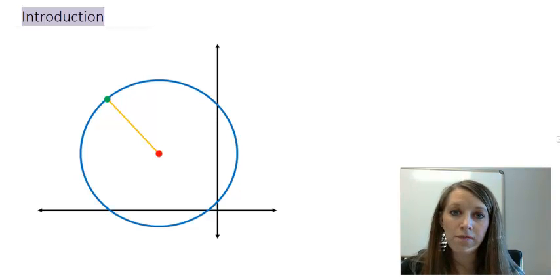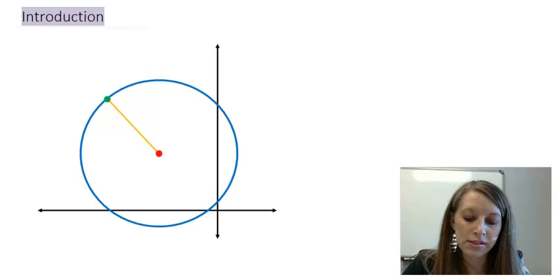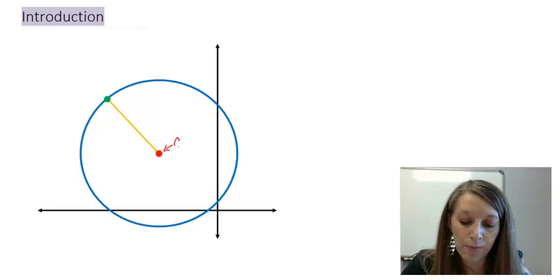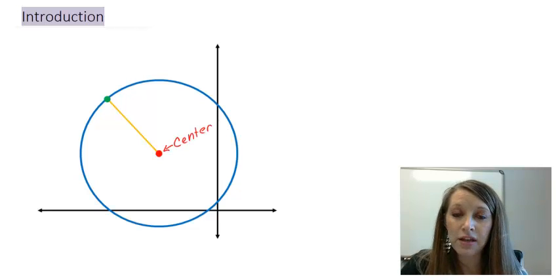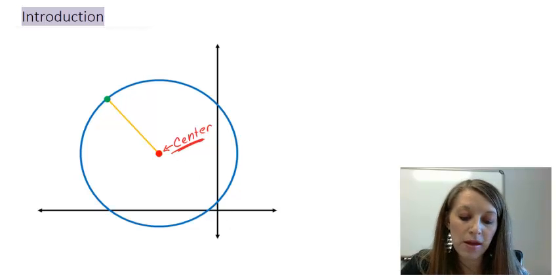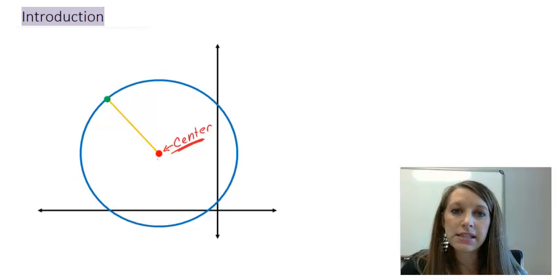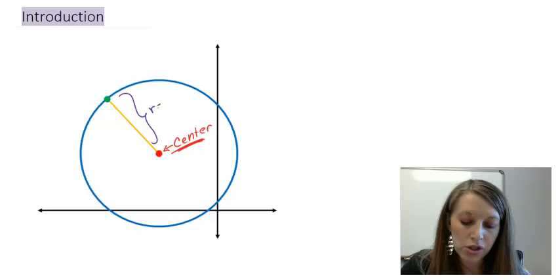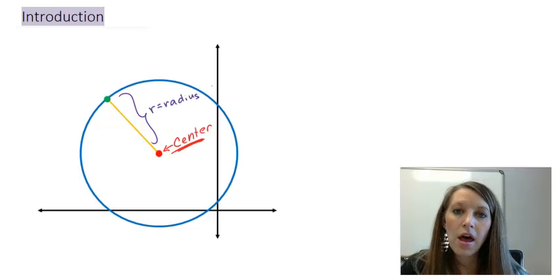The key parts of the circle here are the center of the circle, which is the red dot here, and that is basically just called the center. Whenever we graph these, that's one of the key elements that we need to know. The other element that we need to know is the distance from the center of a circle to any point on the edge of the circle. And that distance is, of course, labeled by r, which stands for the radius.